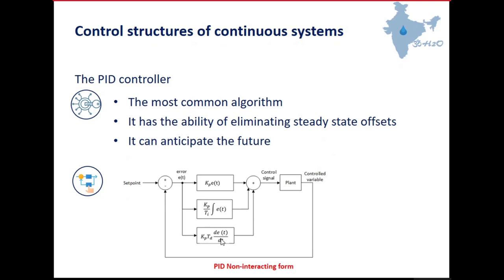There is also a derivative block, multiplied by a parameter called the derivative time. These three blocks can be calculated in parallel — this is the non-interactive form of the PID, where the three blocks are calculated in parallel and summed to evaluate the control signal. You can find different ways of combining the actions. One important thing is that actuators have limitations — for example, a valve can be fully open or fully closed, or a pump has limited speed.